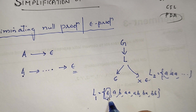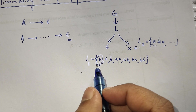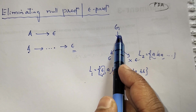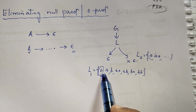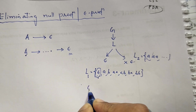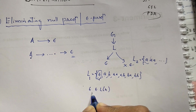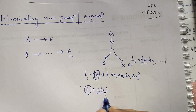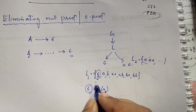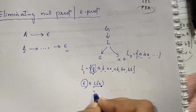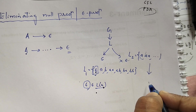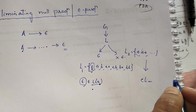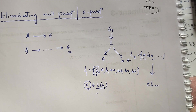If the language generated by the grammar contains epsilon, you should not eliminate all epsilon productions, because epsilon is part of the language and must be preserved. However, if the language does not contain epsilon, then you can eliminate all epsilon or null productions from the grammar.